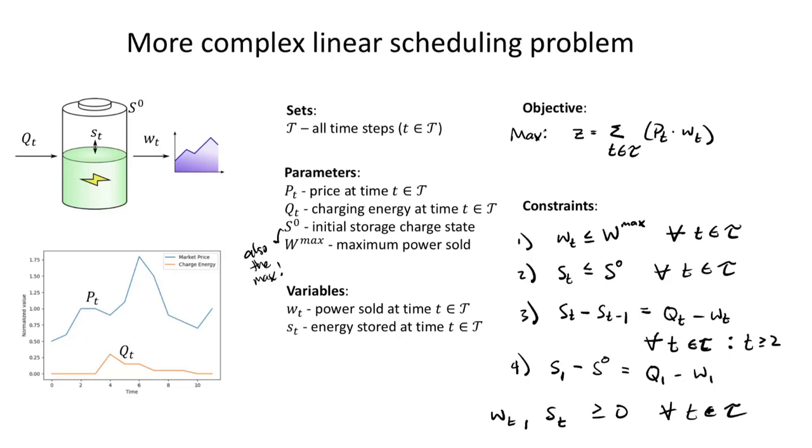I want to answer the question of how many constraints and how many variables do we have. And let's think about that for just a second because it's important. We've identified W sub T and S sub T, but we have to note that those variables are actually variables for every time period that we include in our time horizon.